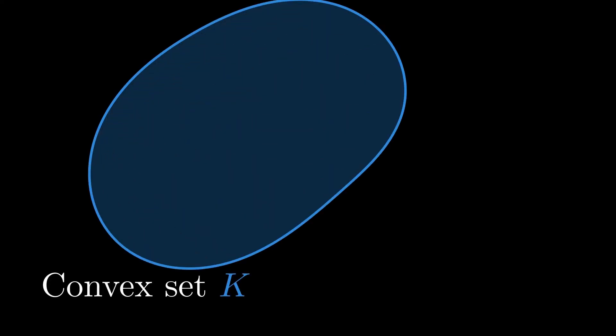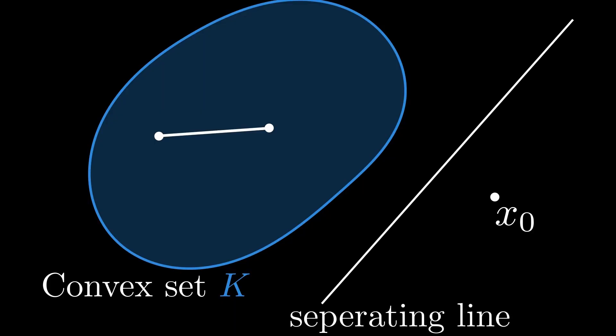Suppose you are given a convex set, so for every two points in the set, the line segment connecting the two points is also in the set. And a point which is not in the convex set. Can we always find a line which separates the convex set and the point, so the set is on one side and the point on the other?